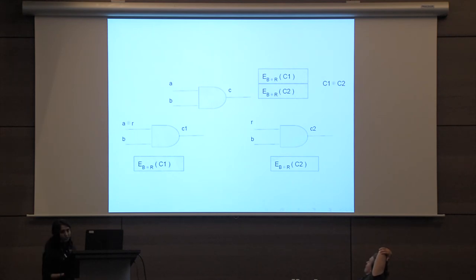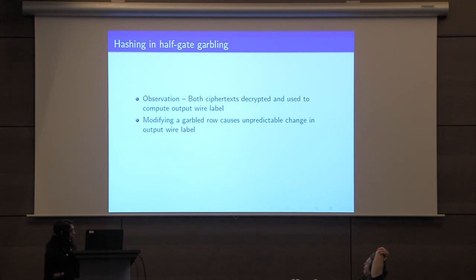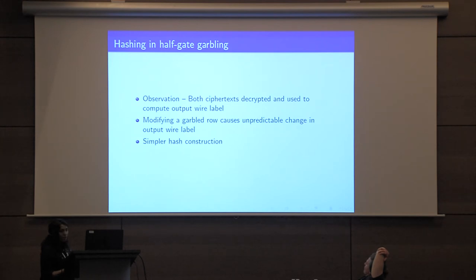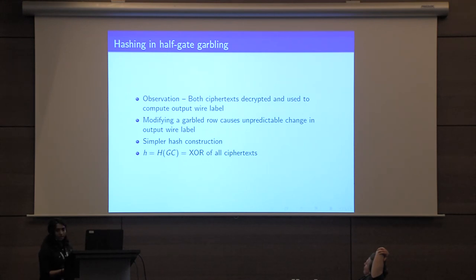In the half gates construction there is no inactive row, meaning both ciphertexts are decrypted during evaluation and used to compute the output wire label. So if the adversary modifies any garbled row, he changes the output wire label computed at that gate. This leads to a simpler hash construction: we set the hash of the garbled circuit to be the XOR of all the ciphertexts without needing a translation function. In the paper we prove this construction is secure under our definition under the same assumptions.